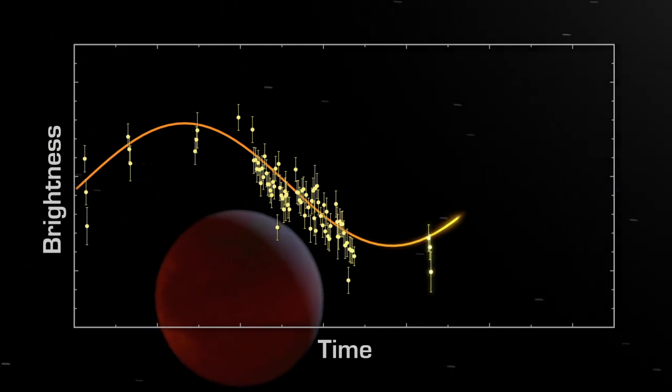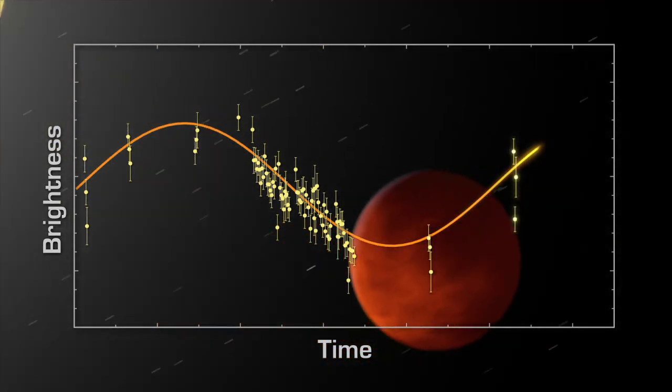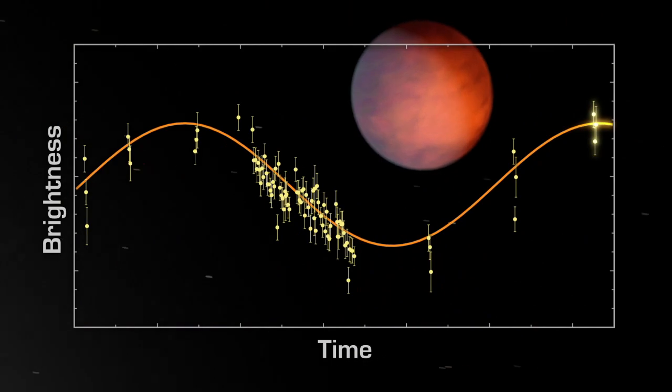Remarkably, that hot spot is not on the side facing the star, but is rotated about 80 degrees towards the boundary between day and night.